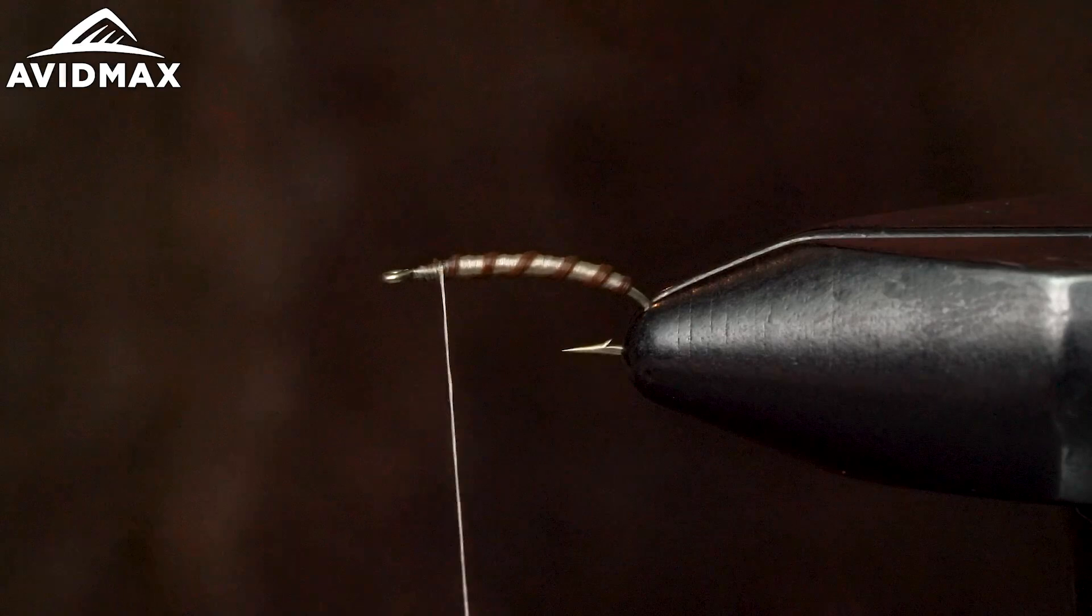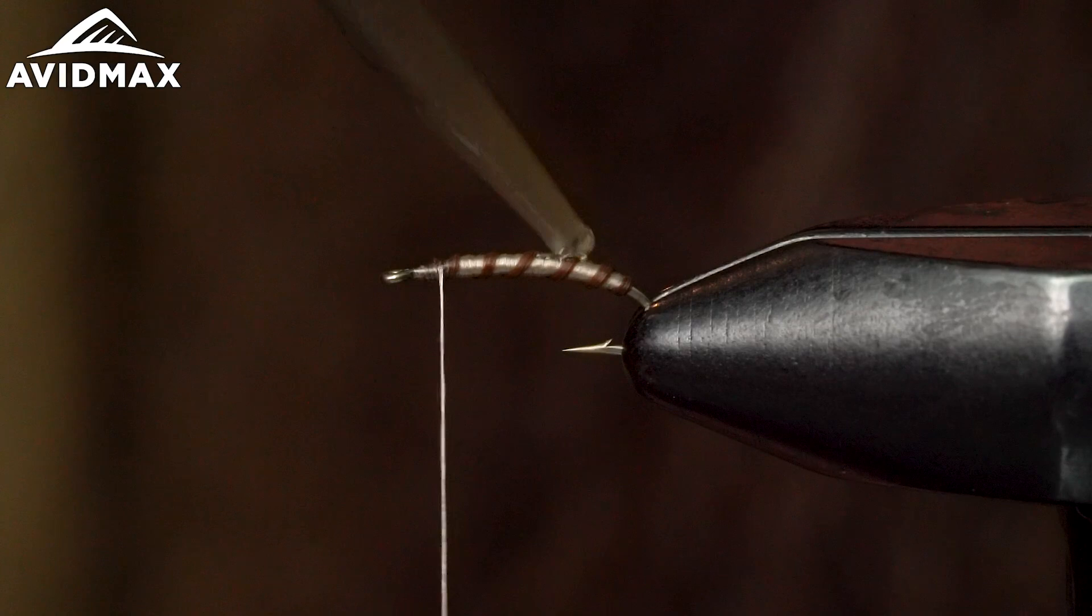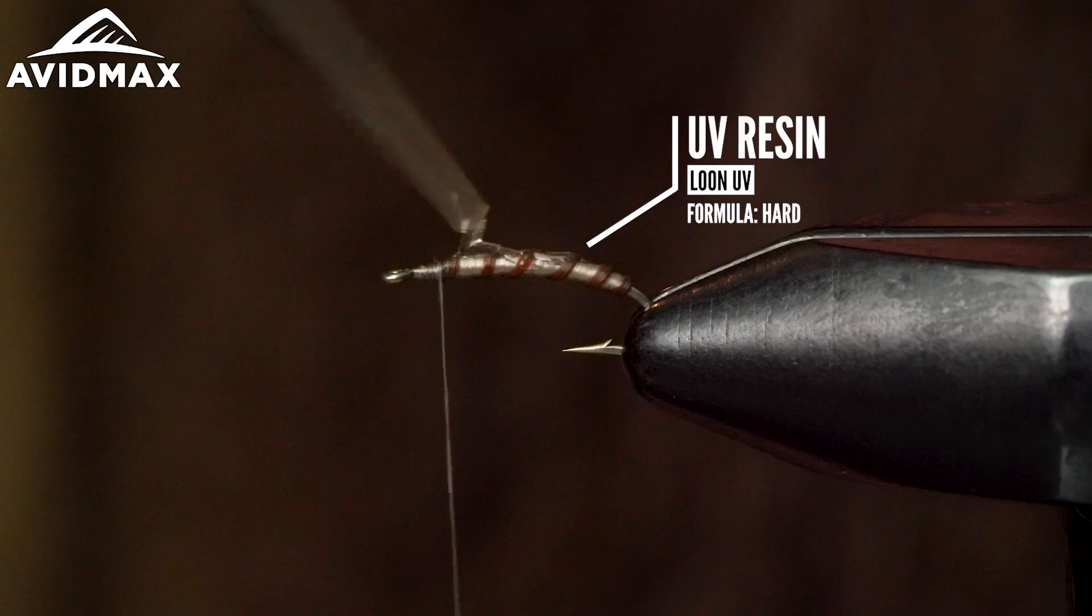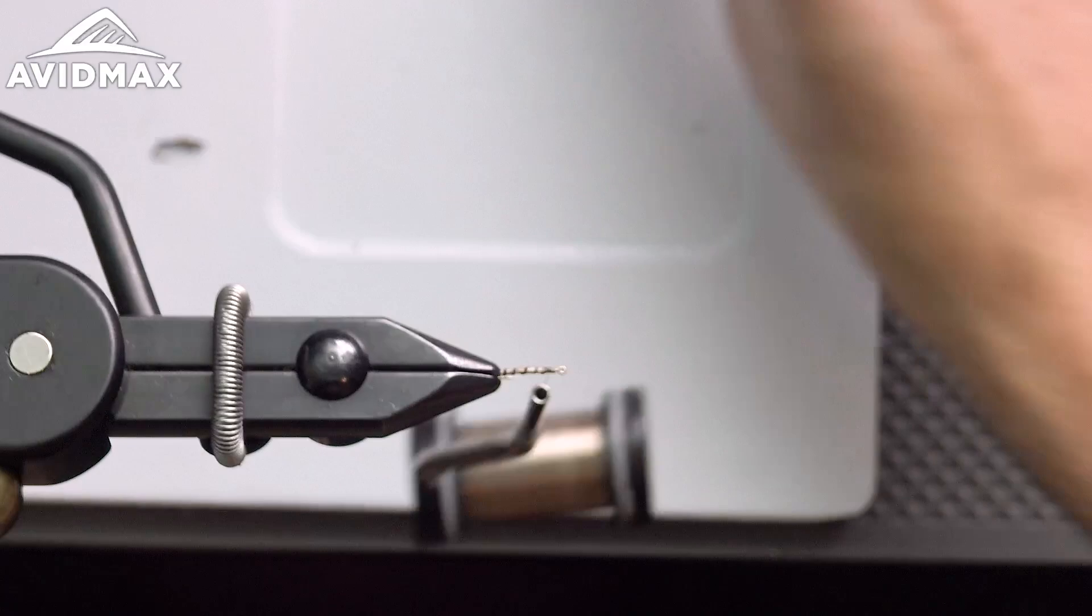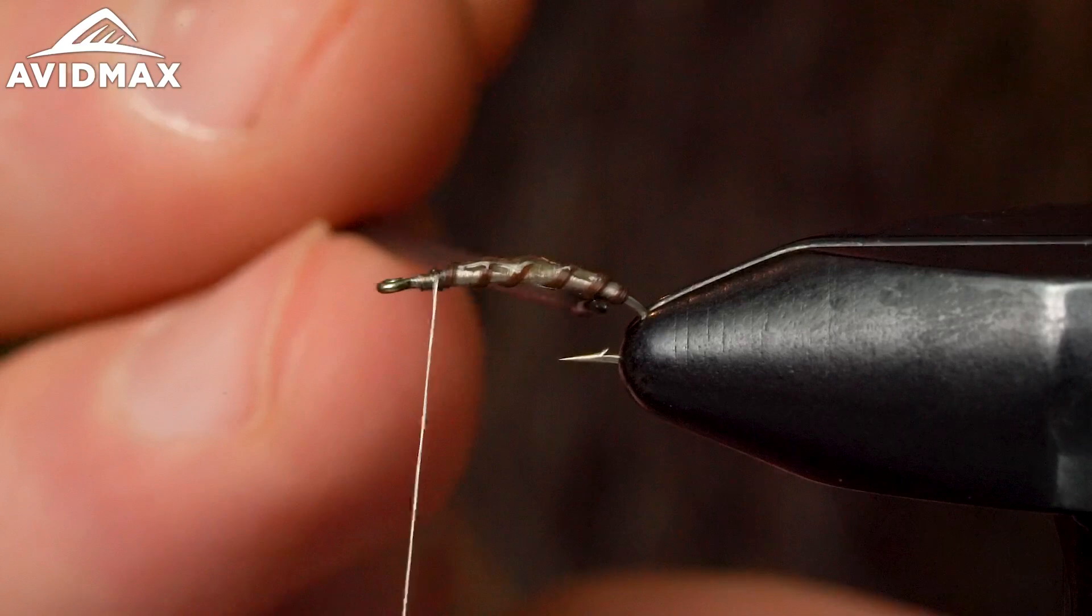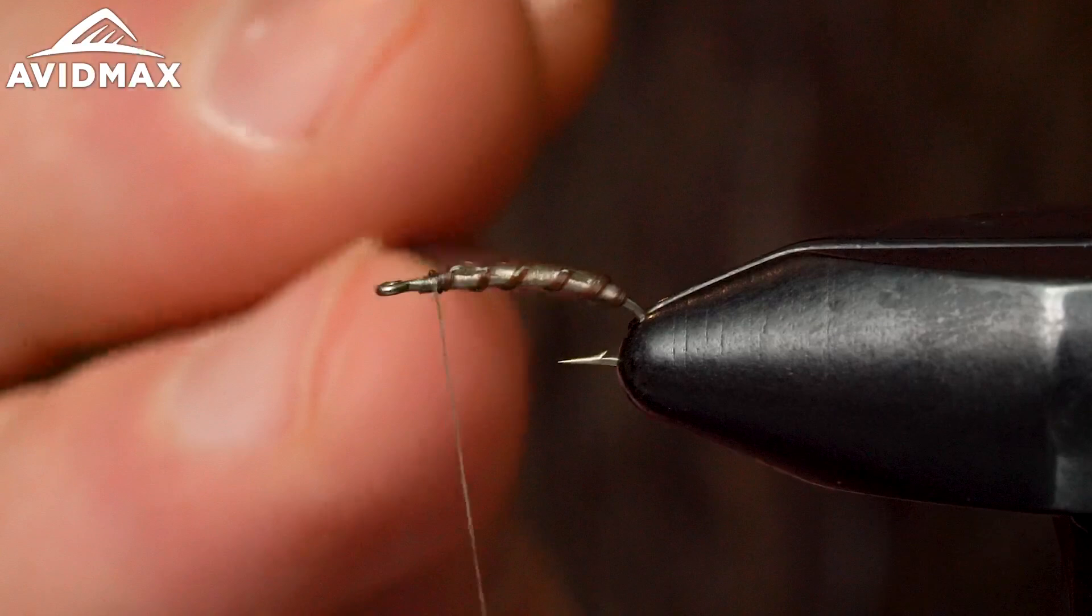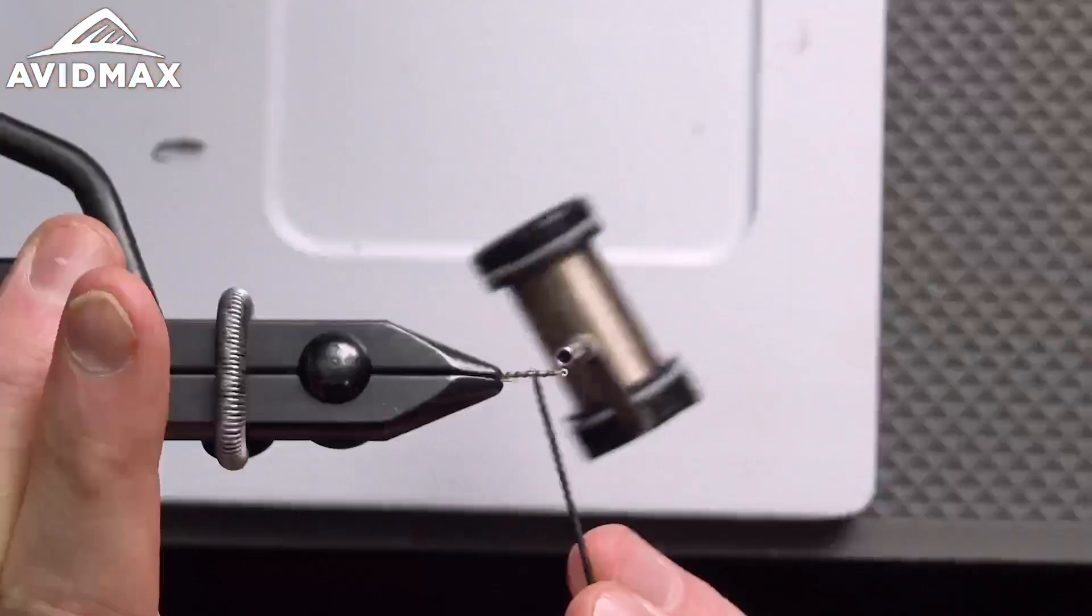Now we're going to throw a little bit of UV. This is aluminum UV thick. So I'm going to put a little dab on here. Now I'm going to take a bodkin and spread it around. Also helps with some durability in the fly. And I'll torch it.